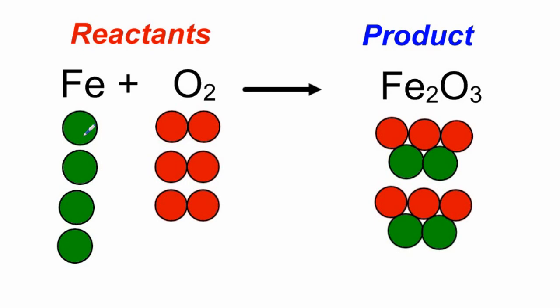And the way we should write that is four Fe's plus three O2's yields two molecules of Fe2O3. Pretty cool, huh? All right, now can we do this without using the models? Well sure we can, because we can count atoms up here. Four atoms, three molecules, two molecules, just like we did with the models. So let's try one of those.